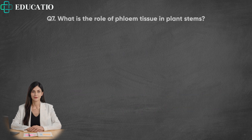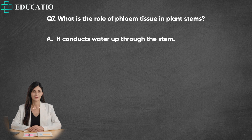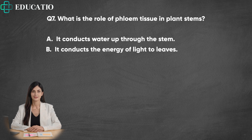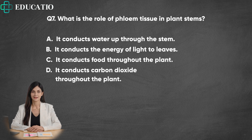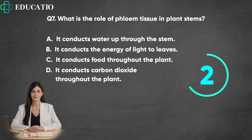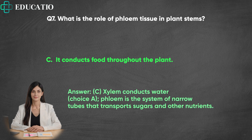Question 7. What is the role of phloem tissue in plant stems? A. It conducts water up through the stem. B. It conducts the energy of light to leaves. C. It conducts food throughout the plant. D. It conducts carbon dioxide throughout the plant. Answer: C. Xylem conducts water (Choice A). Phloem is the system of narrow tubes that transports sugars and other nutrients.